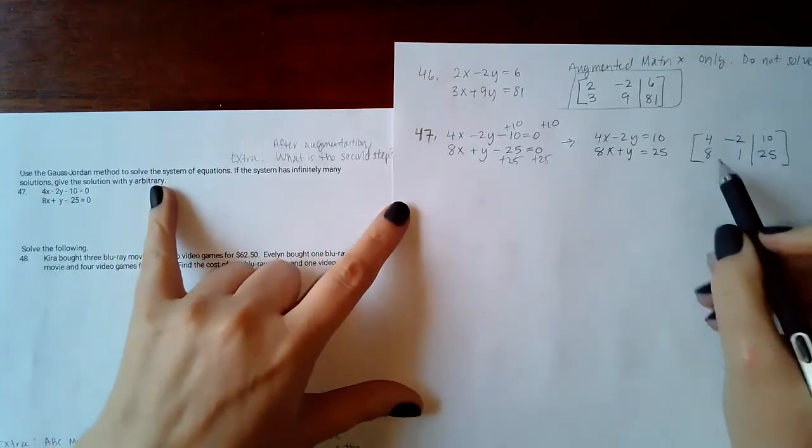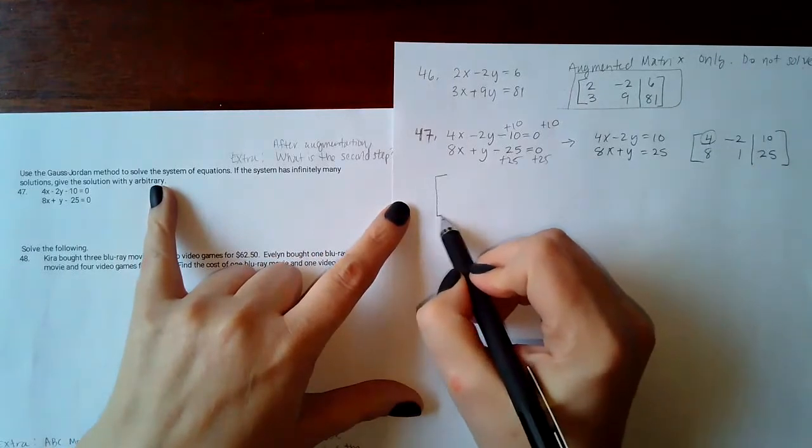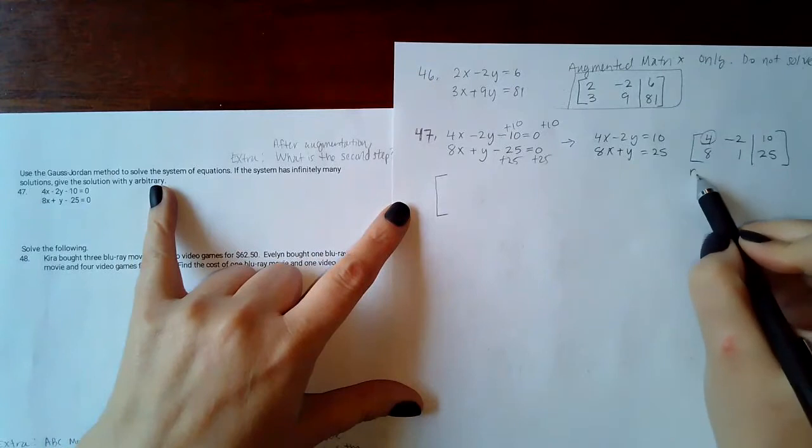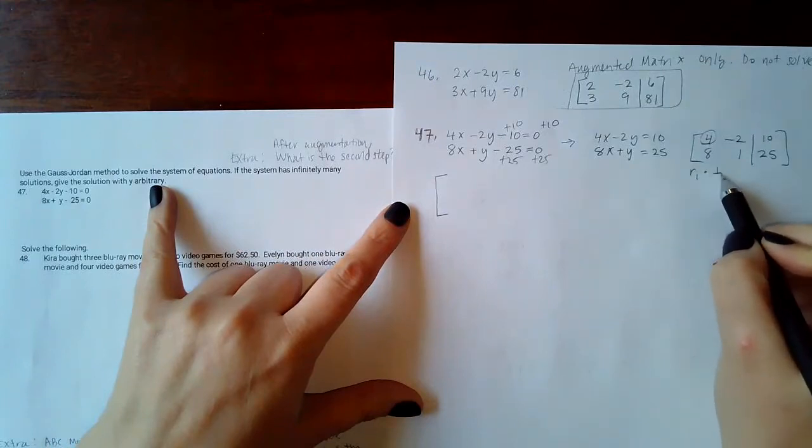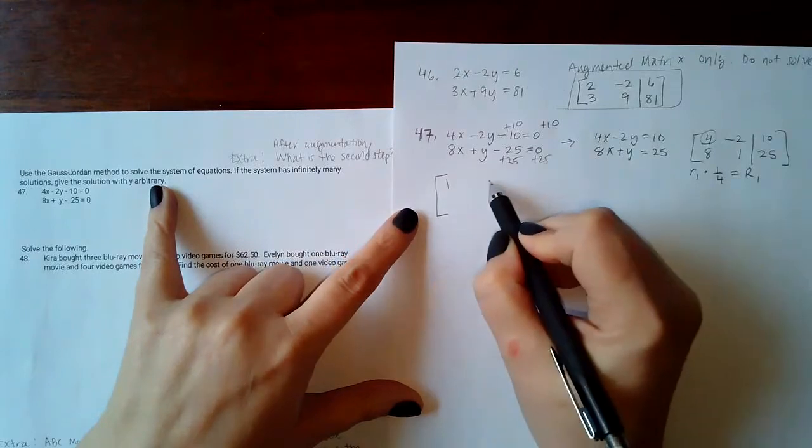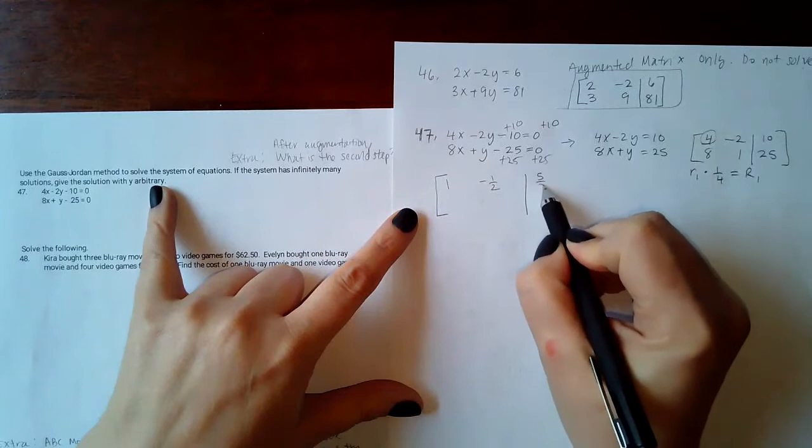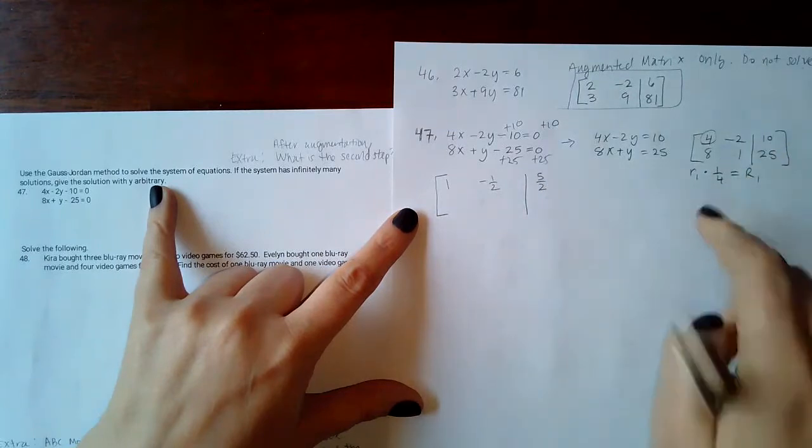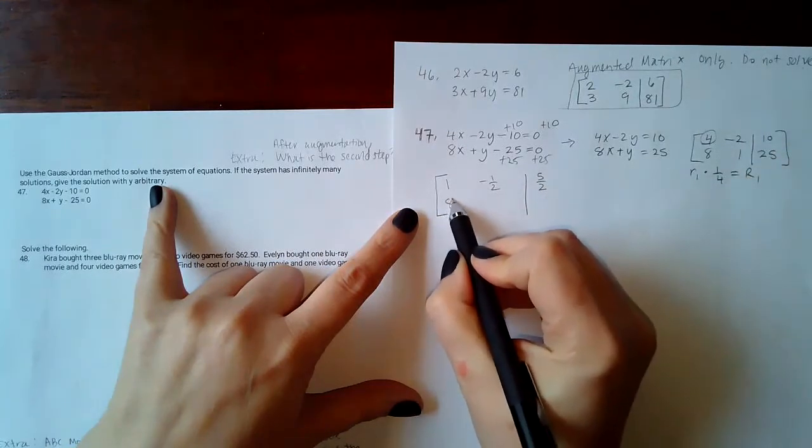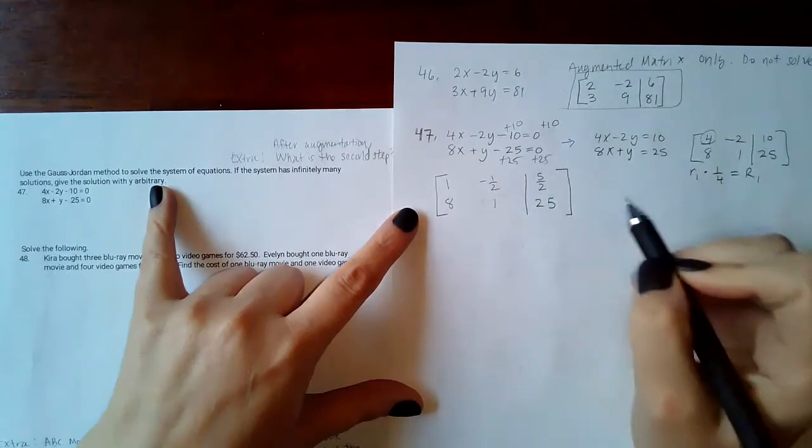I'm going to go through and solve it. The first step is to make that a 1. So I'm going to take row 1 and multiply it by 1/4 to get the new row 1. So I get 1, negative 1/2, and then here I get 5/2 after I reduce 10/4. Now the bottom I'm going to leave it alone.